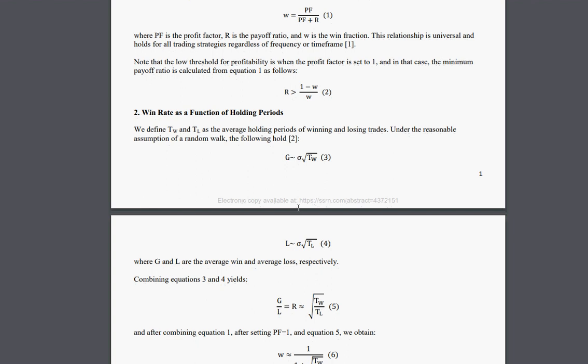the average win is related to the volatility and the square and the average holding period of winning trades by this formula, and the average losing trade is related to the volatility and average holding period for losing trade by this formula.